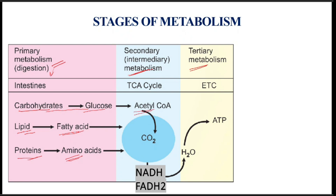citric acid cycle, where they are finally oxidized to carbon dioxide. During this process there is generation of reducing equivalents like NADH and FADH2. These reducing equivalents enter the electron transport chain, where the electrons are accepted by the oxygen atom to form a water molecule, and during this process there is generation of ATP.